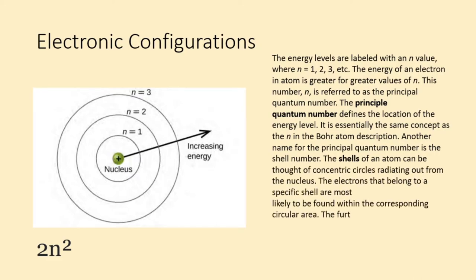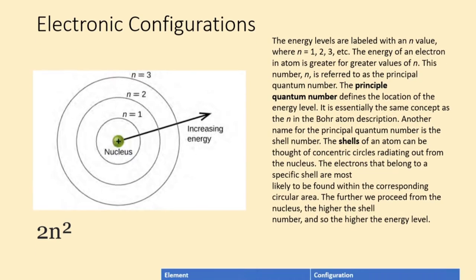It is essentially the same concept as the n in the Bohr atom description. Another name for the principal quantum number is the shell number. The shells of an atom can be thought of as concentric circles radiating out from the nucleus. The electrons that belong to a specific shell are most likely to be found within the corresponding circular area. The further we proceed from the nucleus, the higher the shell number, and so the higher the energy level.